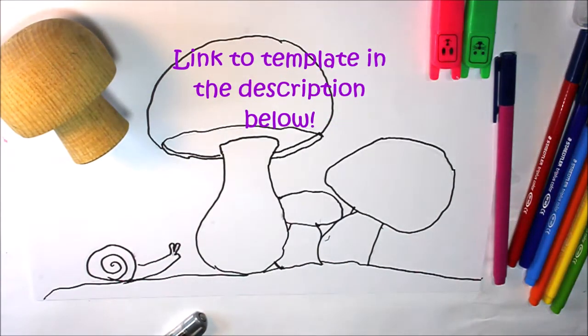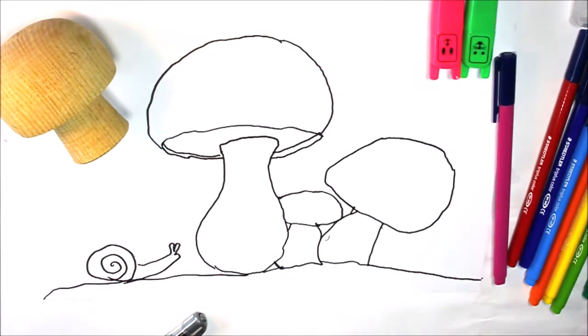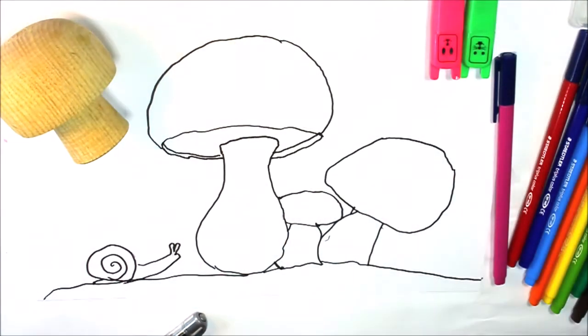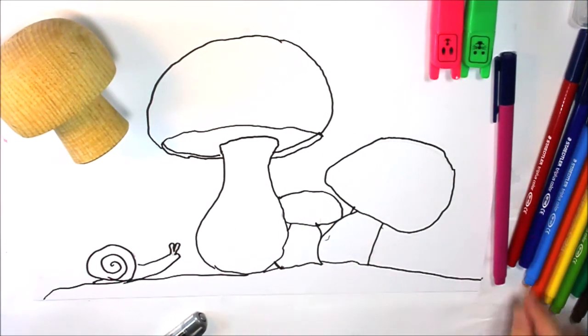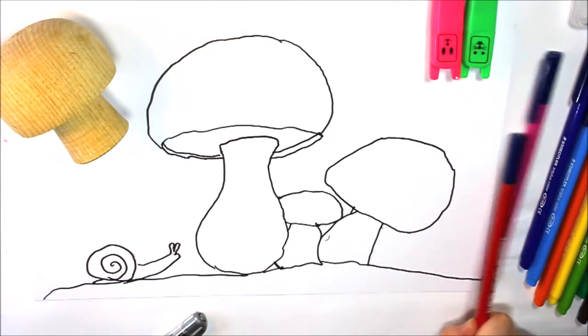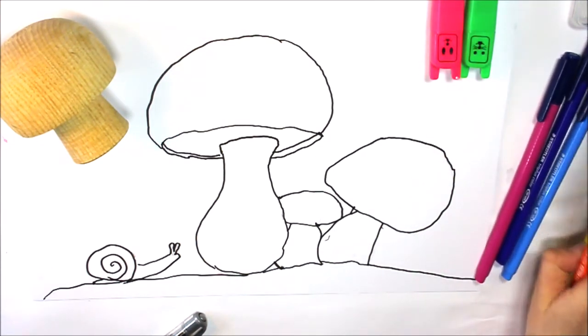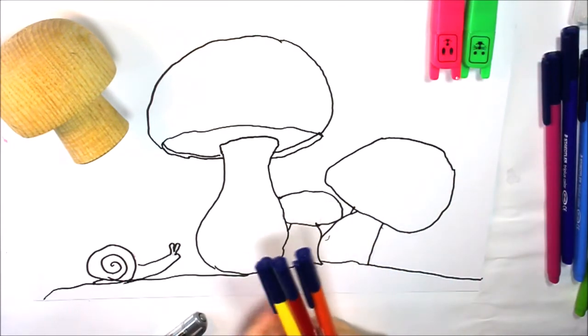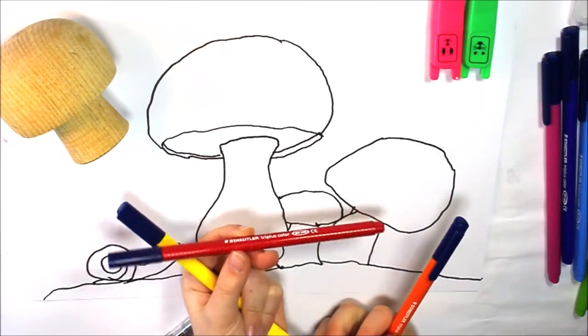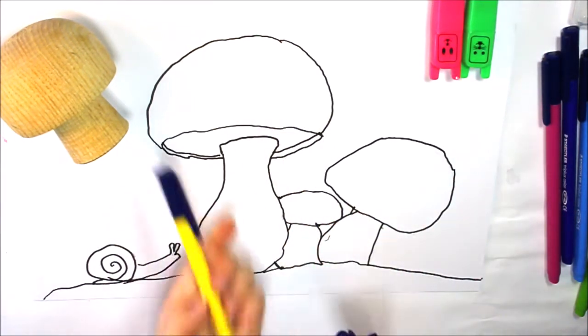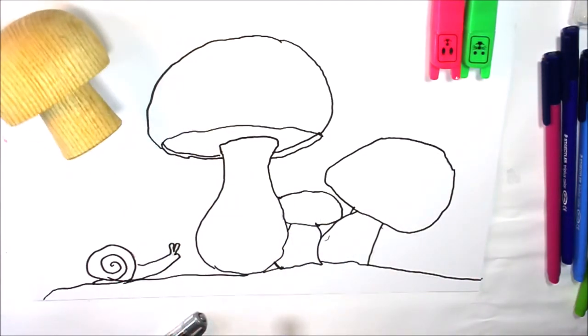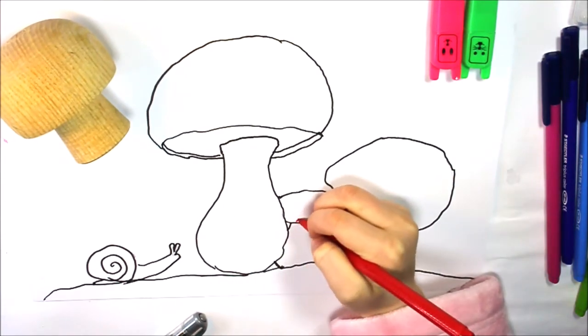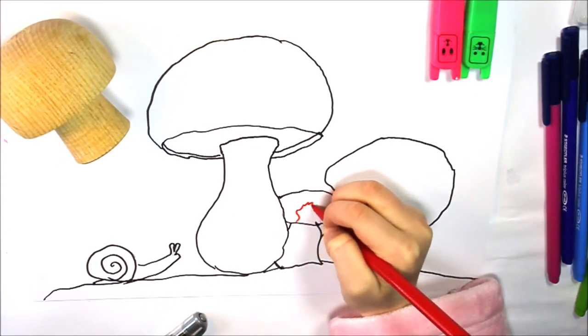I've done the outline and I'm going to start by coloring in the smaller mushroom. The tiny one is going to be a flame mushroom which just popped into my head. I'm going to be using red, orange, and yellow, and try to make it look like a flame. I'm pretty bad at flames but I'll do my colors first.